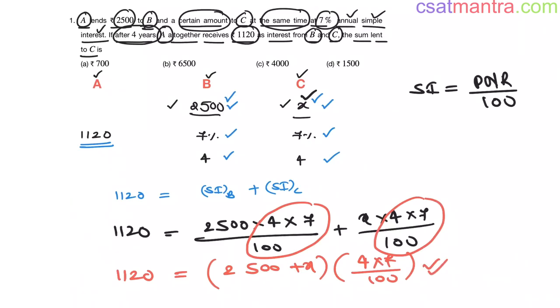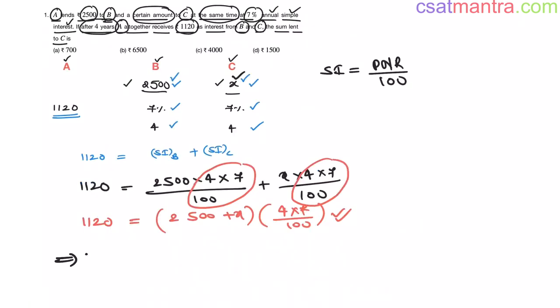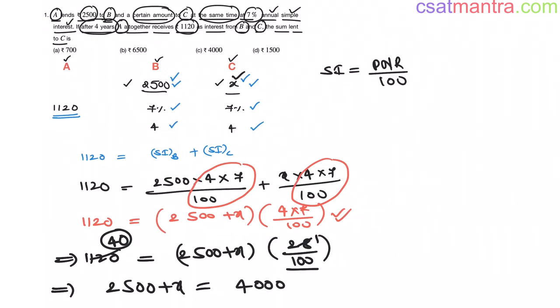4 into 7 by 100 is common in both, so I took it outside. Now, we have 1120 is equal to 2500 plus X into 4, 7's are 28 by 100. 28 by 100 is 40. Now, 2500 plus X is equal to 100 into 40, that is 4000. X is equal 4000 minus 2500, this is equal 1500.